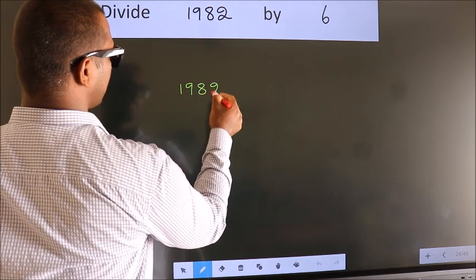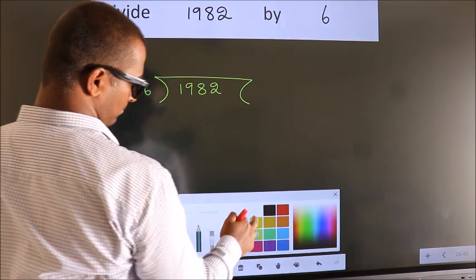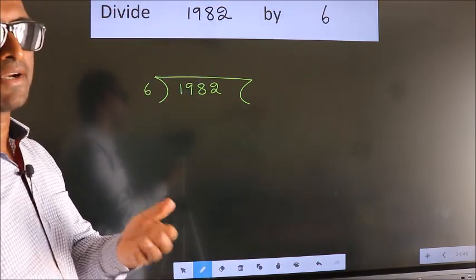1982 here, 6 here. This is your step 1. Next.